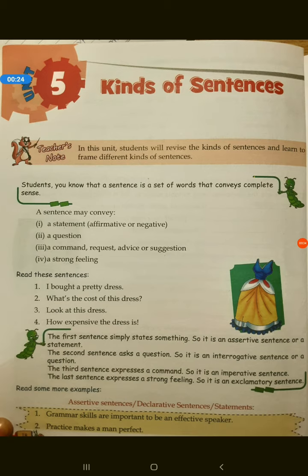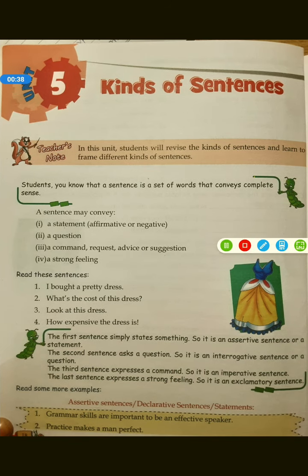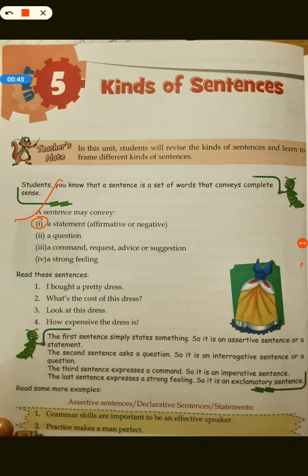Children, I have already told you - I gave you a chart where there were four kinds of sentences. What are the four kinds of sentences? First is the statement, which is also called the declarative or assertive sentence. Second is a question. Third is a command, request, advice or suggestion, which is called imperative sentences. Fourth one is a strong feeling, that is called exclamatory sentences.